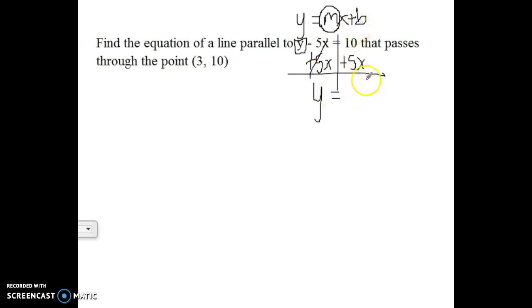10 and 5x are not like terms, so we can't combine them. We would just write them next to each other. And now that it's in slope intercept form, now we can say that the slope is 5. And if we want a line parallel to it, it has to have the same slope.